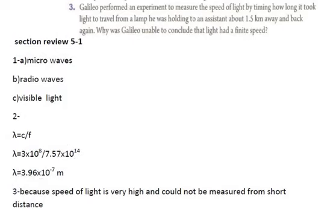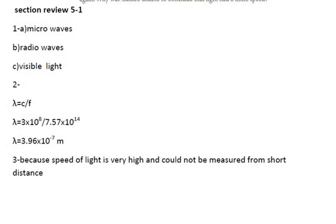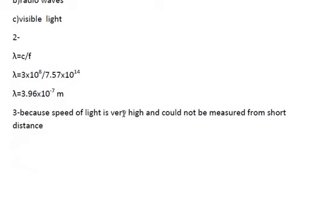The third question says: Galileo performed an experiment to measure the speed of light by timing how long it took light to travel from the lamp he was holding to an assistant about 1.5 kilometers away and back again. Why was Galileo unable to conclude that light has finite speed? The answer says because the speed of light is very high and could not be measured from short distances. Thank you for listening.